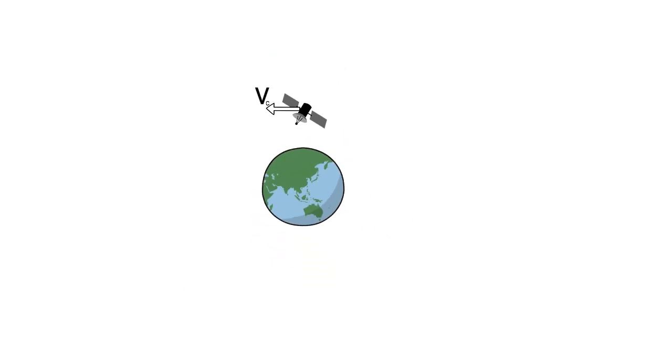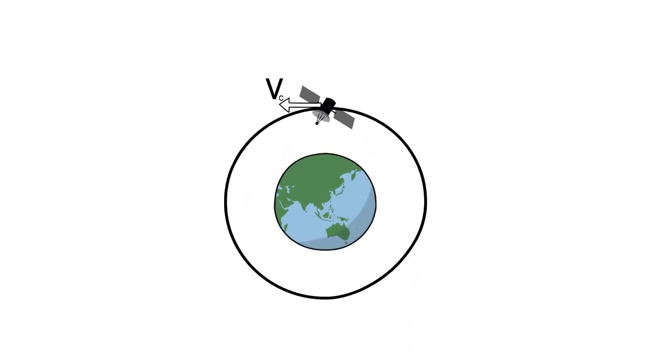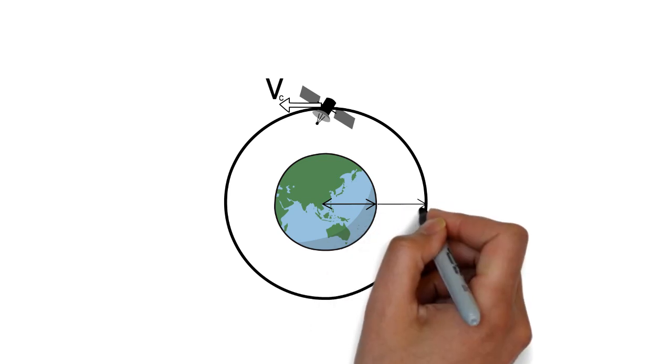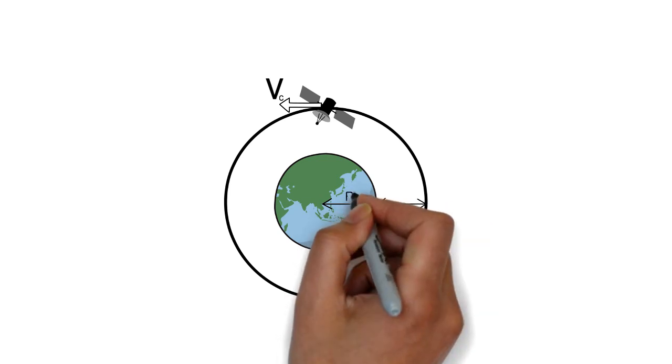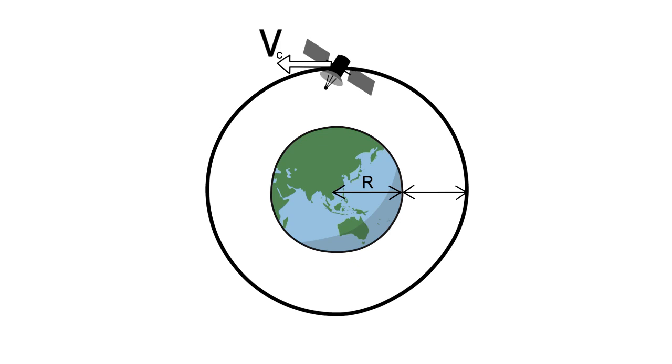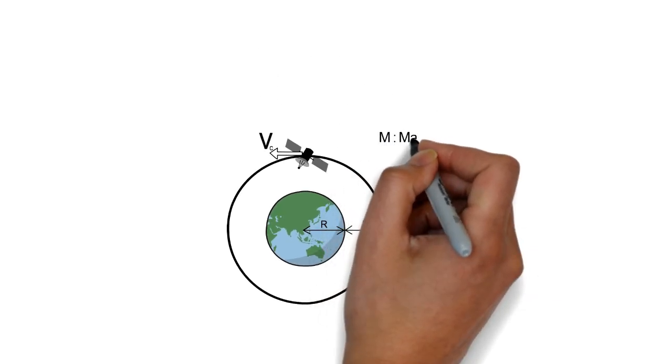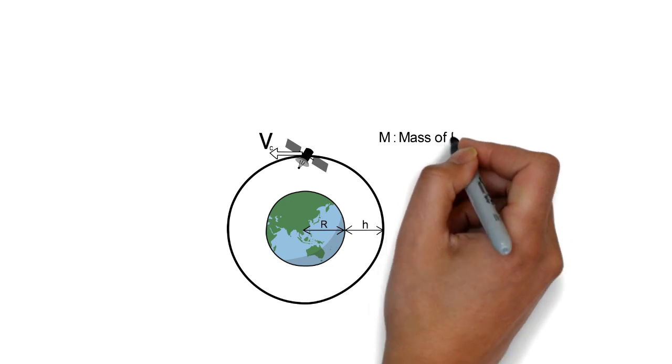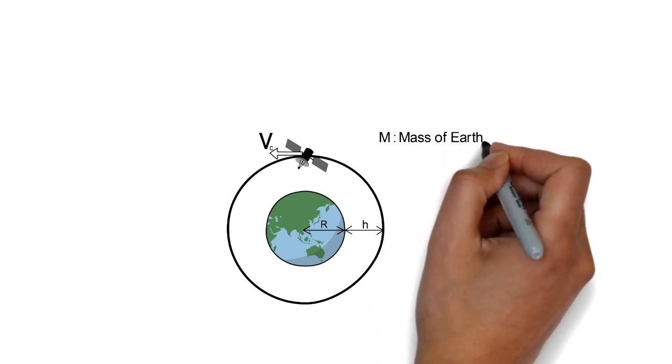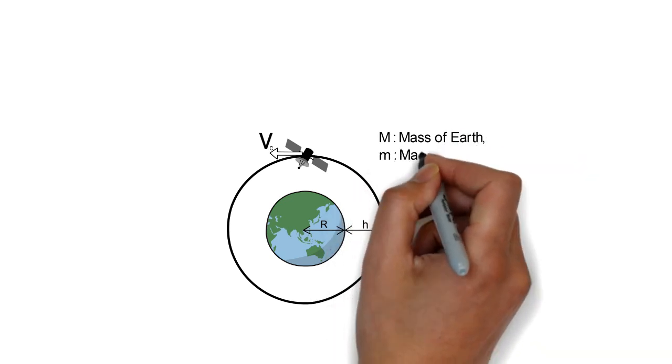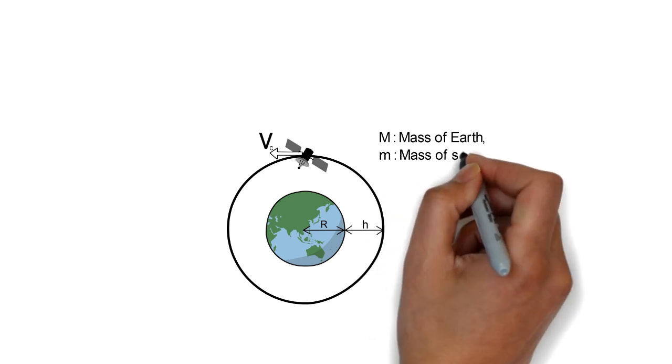Let r be the radius of Earth and h be the height at which the satellite is orbiting from the surface of the Earth. Capital M is mass of Earth, small m is mass of satellite, small r is equal to capital R plus H.